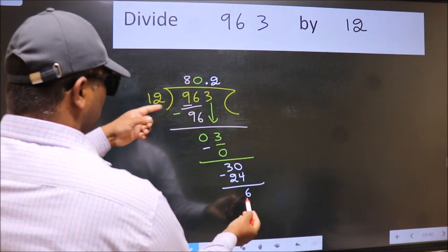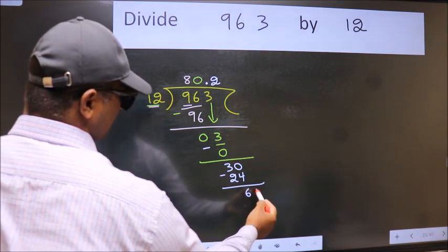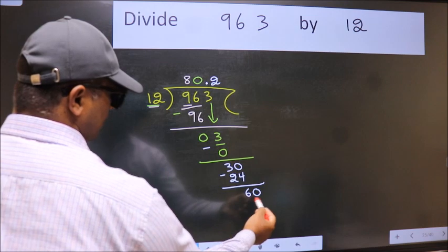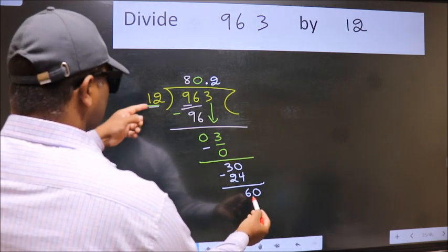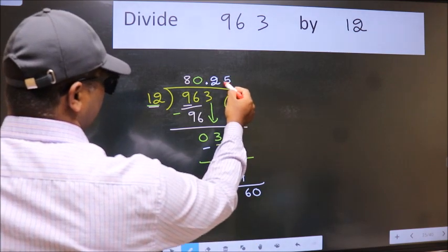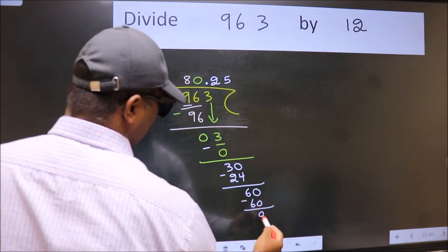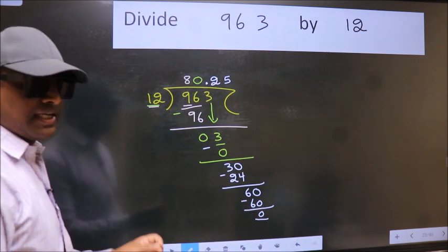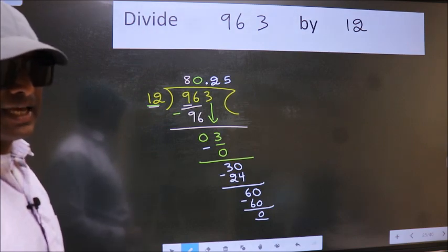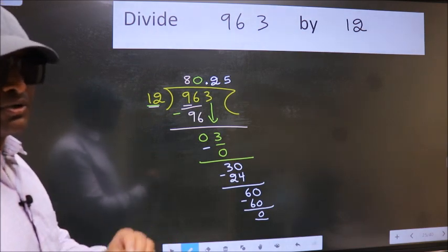Now we subtract, we get 6. 6 is smaller than 12. We already have the decimal, so directly take 0. 60. When do we get 60 in 12 table? 12×5 is 60. Now we subtract, we get 0. Did you understand where the mistake happens? You should not do that mistake.